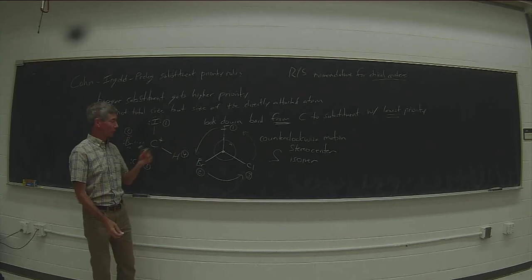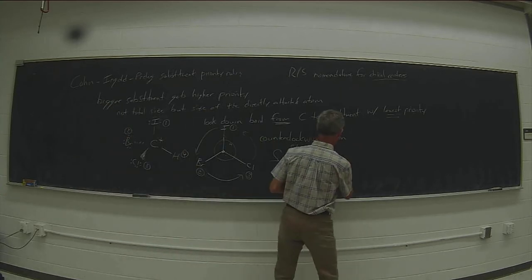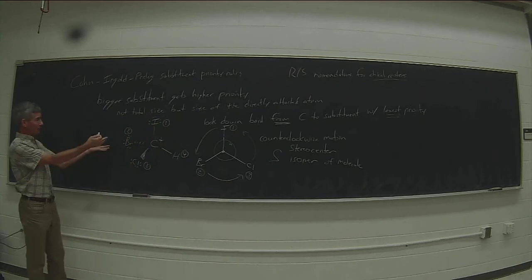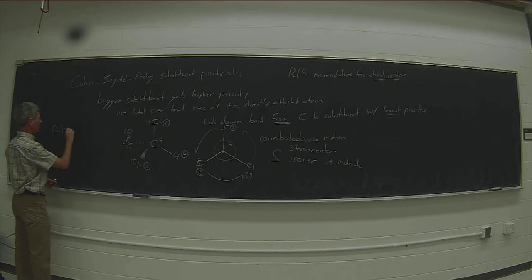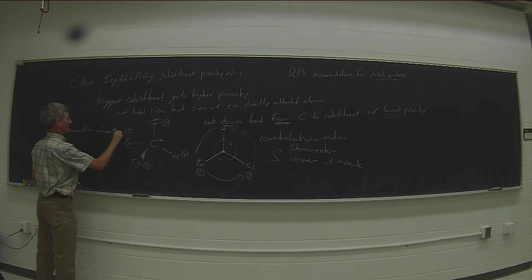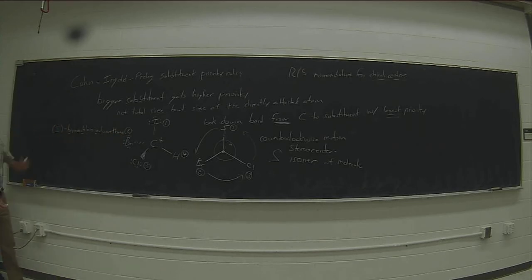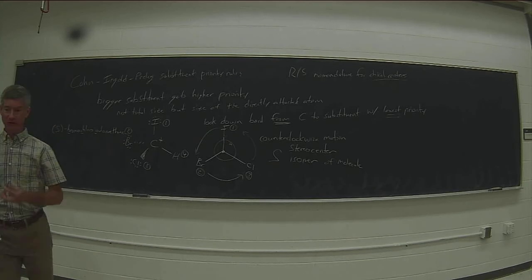The counterclockwise motion means this is the S stereocenter. Since there is only one chiral center, this molecule is also the S isomer. If I were to name this compound, I would name it (S)-bromo-chloro-iodo-methane, where substituents are named in alphabetical order: B before C, C before I, then methane because it's a single carbon.